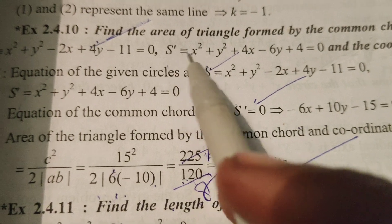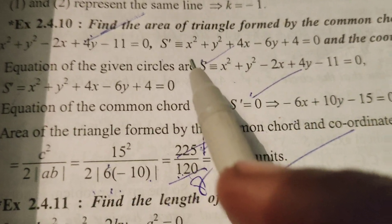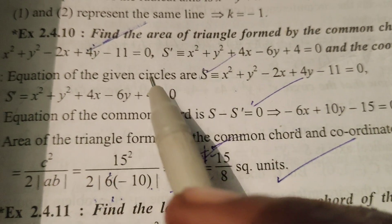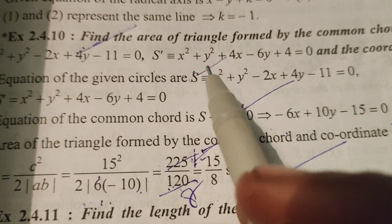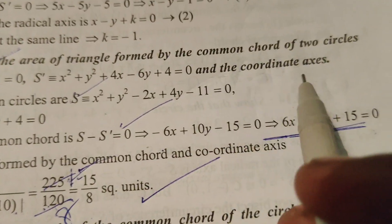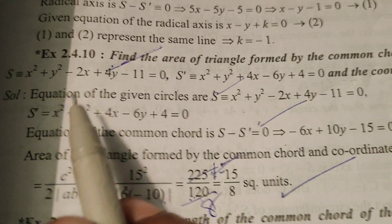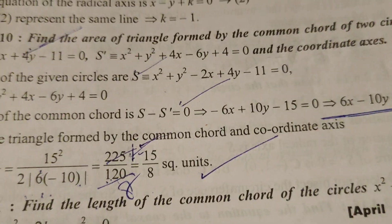Area of the triangle, area of the triangle by the given problem - I mean given common chord of two circles S and S dash. Okay, thank you.